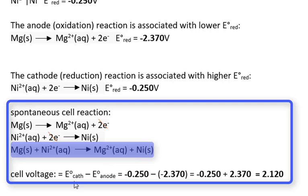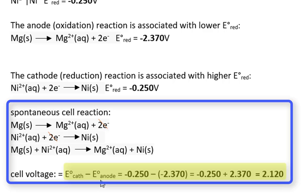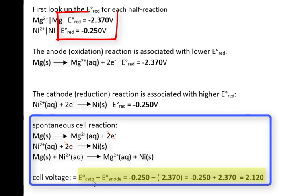The cell voltage is calculated as E cathode minus E anode, where these voltages are entered as reduction half-reaction values. E cathode is negative 0.250 volts and E anode is negative 2.370 volts, giving a cell voltage of positive 2.10 volts. A positive cell voltage implies a spontaneous reaction.